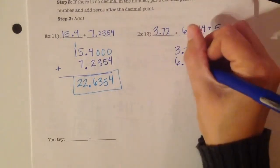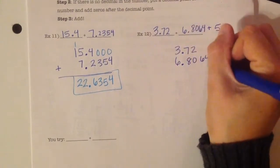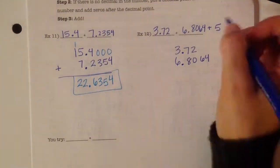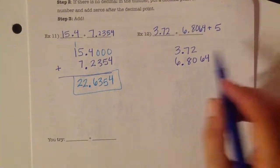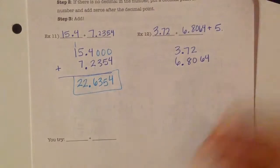6 goes to the left. 8, 0, 6, 4 goes to the right. And then the last number. There's no decimal in it, which means that the decimal is at the end on the right, and I can add zeros afterwards.